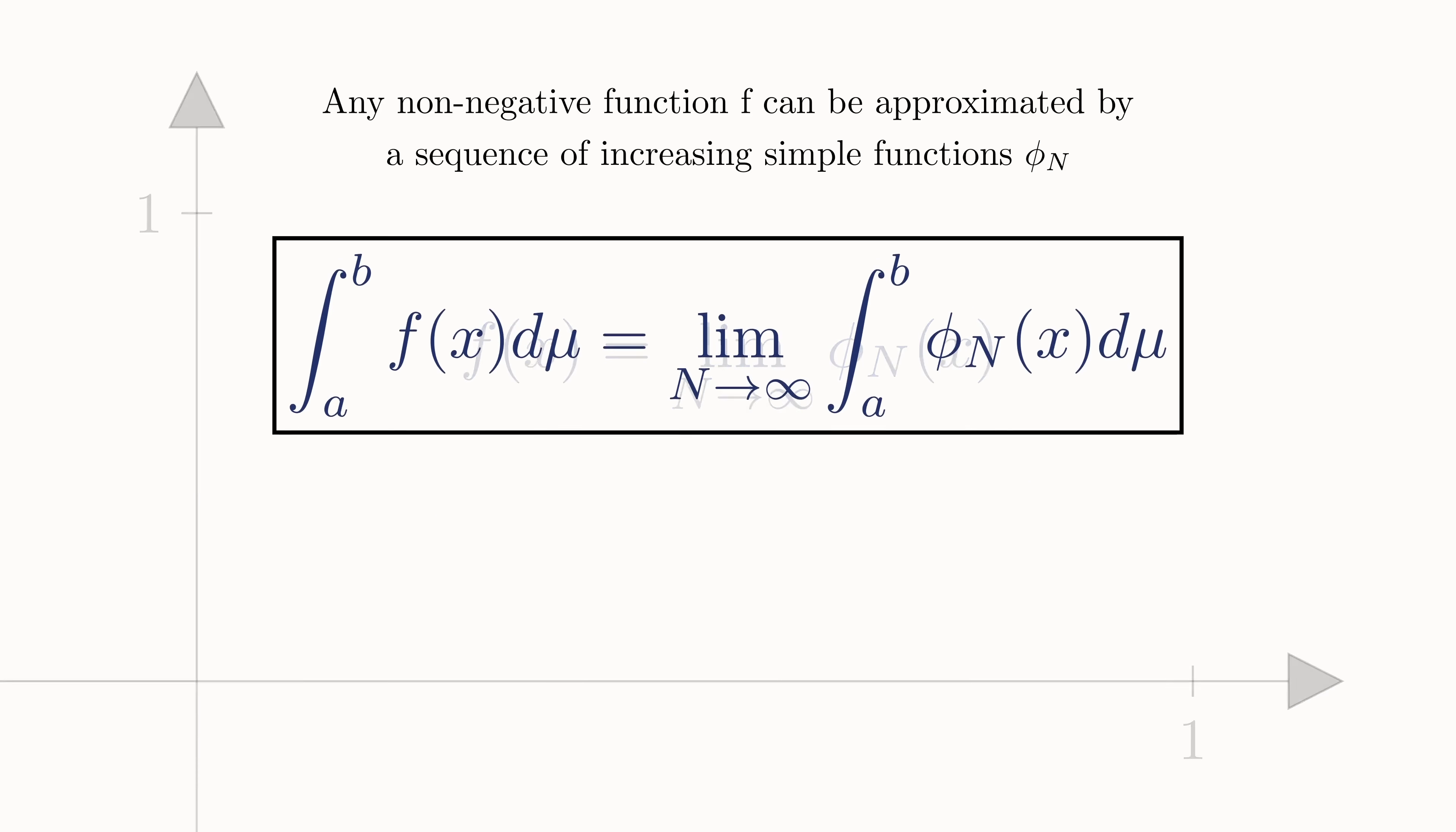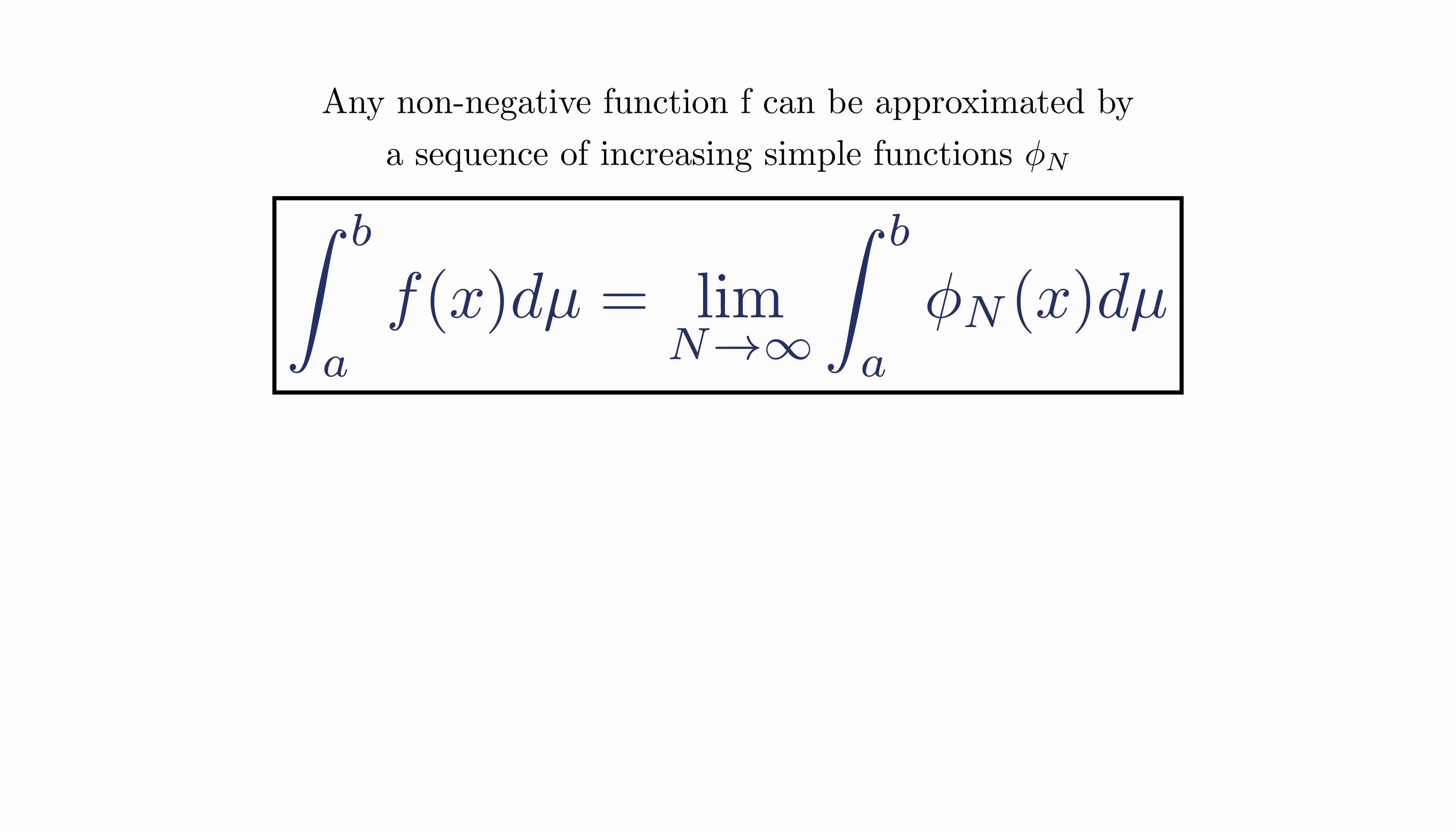In fact, this is a specific example of an extremely powerful theorem central to measure theory, the monotone convergence theorem, which essentially guarantees that any time you have a sequence of functions converging, then you can always freely interchange integrals and limits.